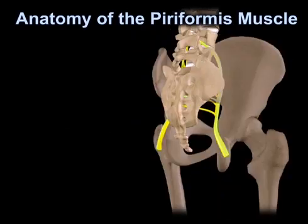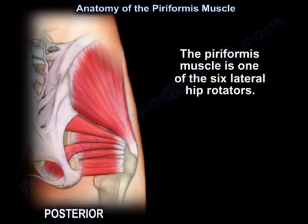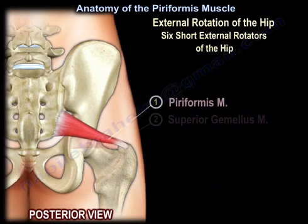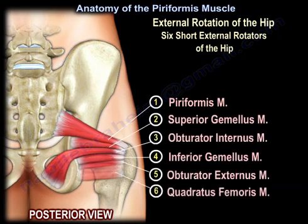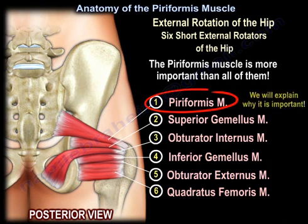Anatomy of the Piriformis Muscle. The Piriformis Muscle is one of the six lateral hip rotators. This is the list of the lateral hip rotators. The Piriformis Muscle is more important than all of them, and we will explain why it is important.